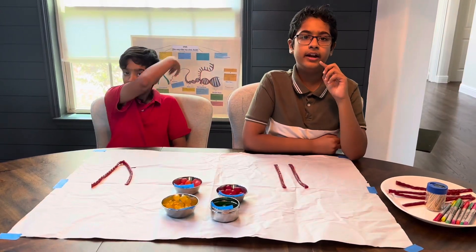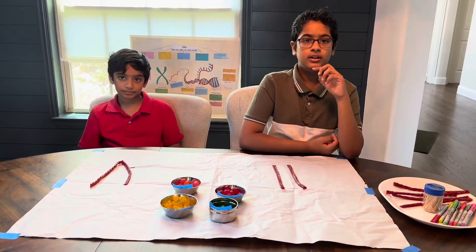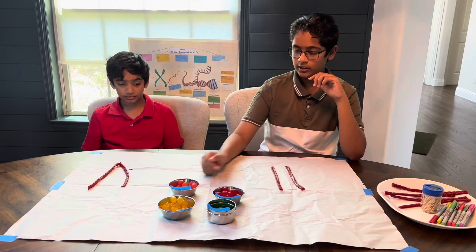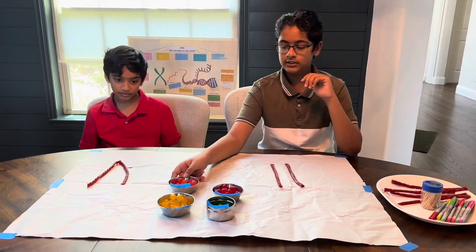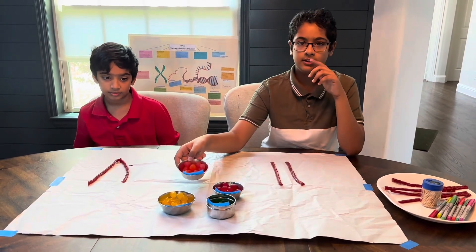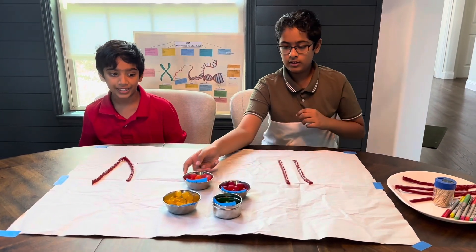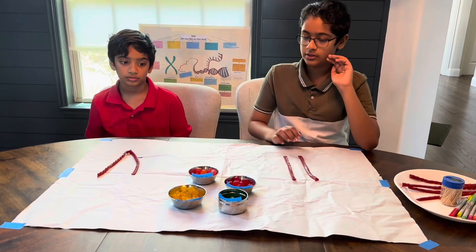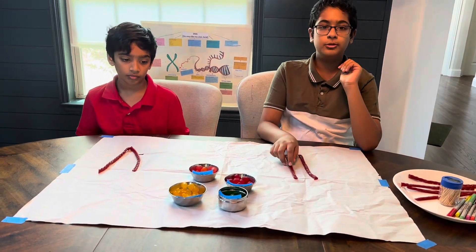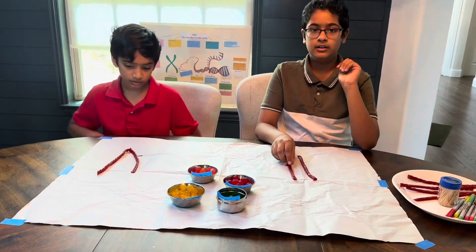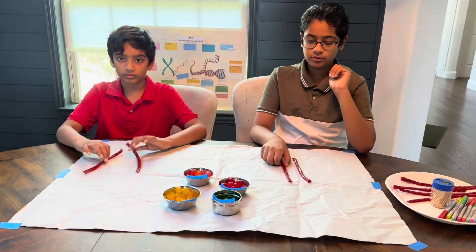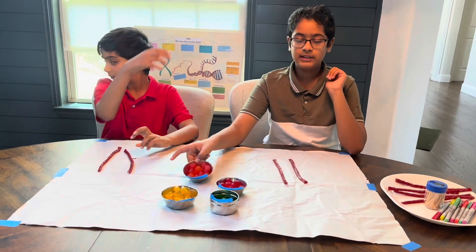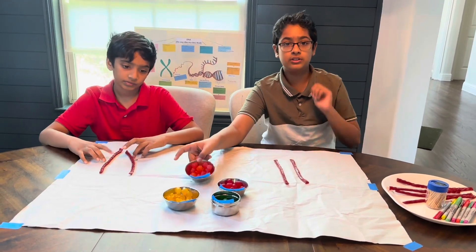Today we're going to be doing a DNA model, and this time we're going to be using candy. We have these dots, these huge dots over here, and some gummy bears, and we have Twizzlers over here. The Twizzlers will be like the DNA backbone, and the dots will be like the nitrogenous bases.